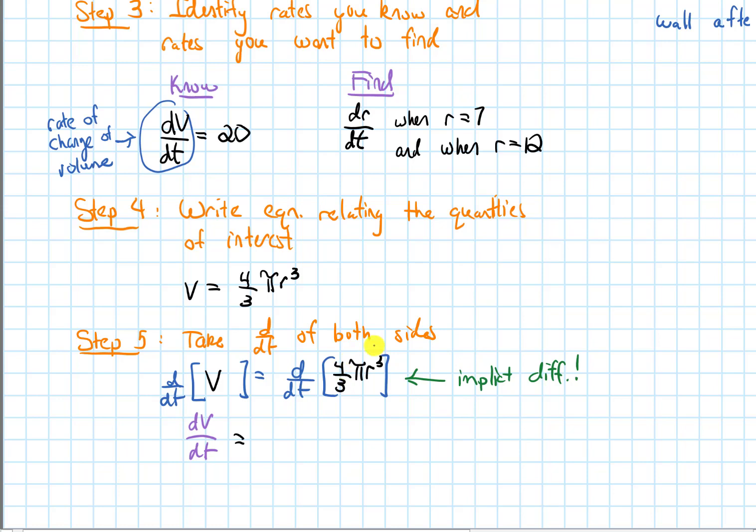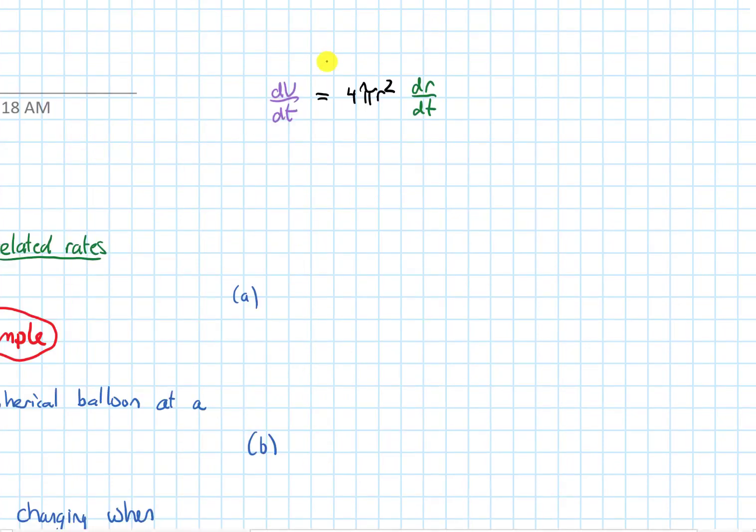On the right-hand side, I'm still going to need to differentiate implicitly. I'm going to first deal with the r cubed. That's going to come down, and when it comes down, it's going to multiply the 4/3, and it'll cancel the 3 on the bottom. So I'll have 4π r squared, but then I have to do chain rule because these variables are different. I've got to multiply by the derivative of r, the inside, and that is dr/dt.